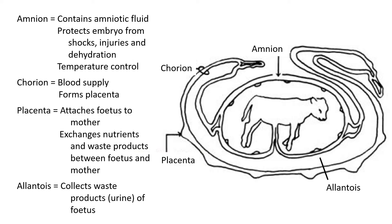The amniotic fluid also serves temperature control. Inside the uterus the temperature is around the cow's body temperature — about 38 to 39 degrees. Water doesn't change its temperature easily, so it can't easily become too cold or too hot. This is why the fluid helps regulate temperature and protects all around the fetus.